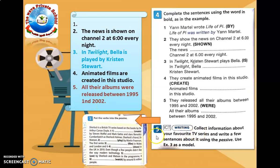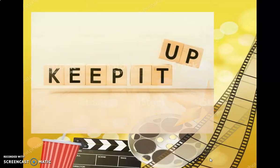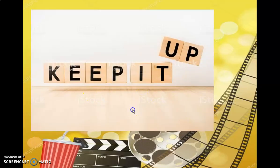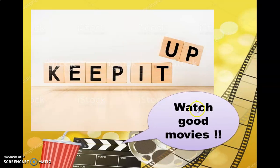In number five, you are asked to collect information about your favorite TV series and write a few sentences about it using the passive form. Use exercise three as a model. This is a notebook activity. Keep it up, stay safe, and watch good movies. Until the next video — bye!